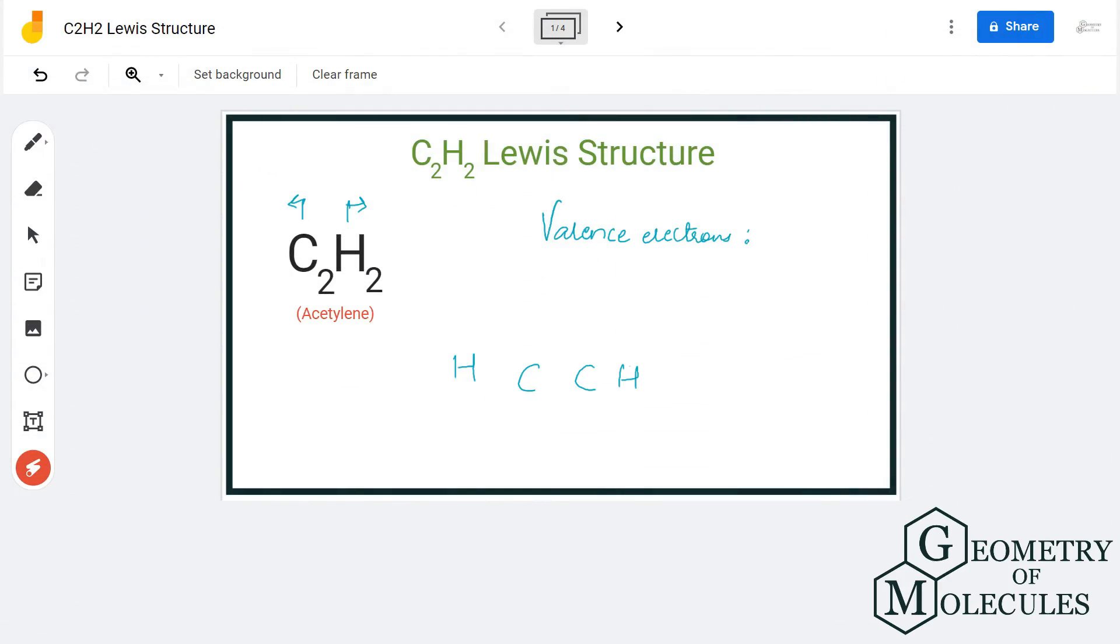Hi guys, today in this video we are going to look at the Lewis structure of C2H2 molecule. It's a chemical formula for ethyne and it is made up of two atoms of carbon and two hydrogen atoms.